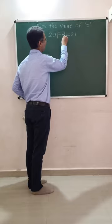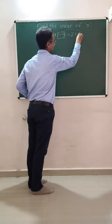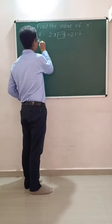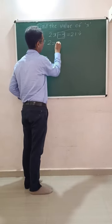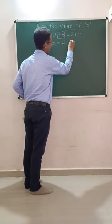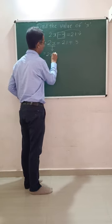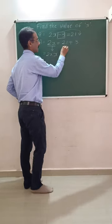If minus 3 is on the left side, we move it to the right side as plus 3. So we have to write 2x is equal to 21 plus 3. Here we can write 2x as 2 times x.